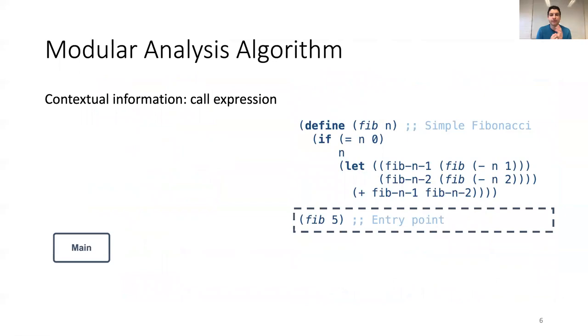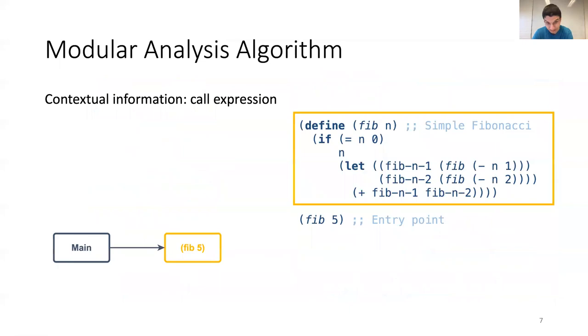Now, let's briefly first look at how the analysis works. Well, the analysis always starts by analyzing the main program, a main component, and this corresponds to the entry point of the program. So, when this main component is analyzed, it finds, the analysis finds a call to fib-5 and creates a new component for this. Then, in the second step, the analysis will analyze these components and finds two more calls to fib-5.